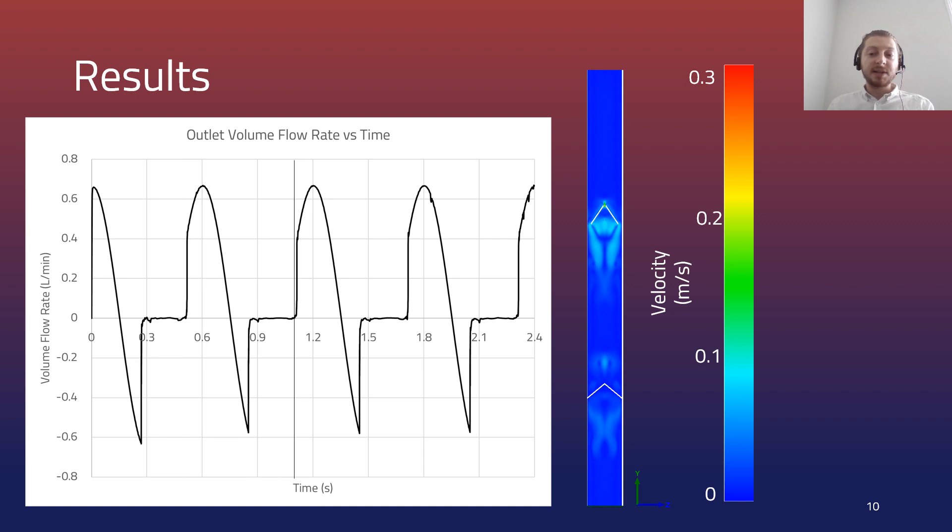That opened the semilunar valve. As the atrioventricular valve moves back upwards, fluid is drawn back through the domain which closes the semilunar valve, and that's shown as negative flow rate on the graph. Once the semilunar valve is closed, the atrioventricular valve opens before closing again as it moves back down and the cycle restarts.